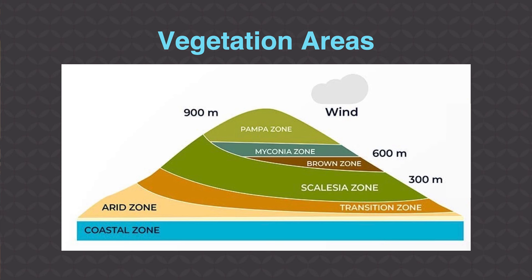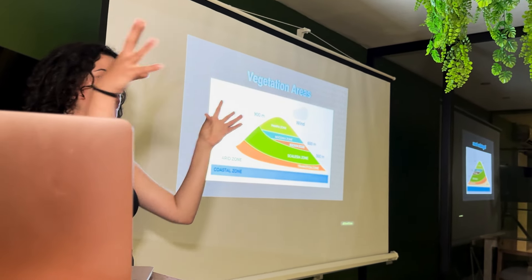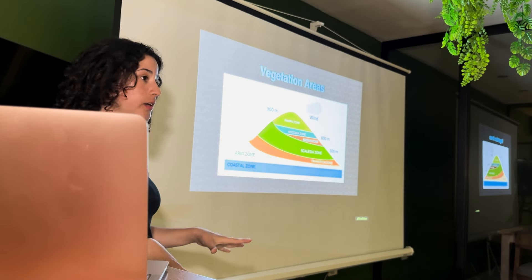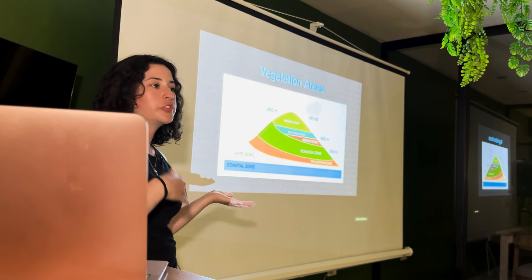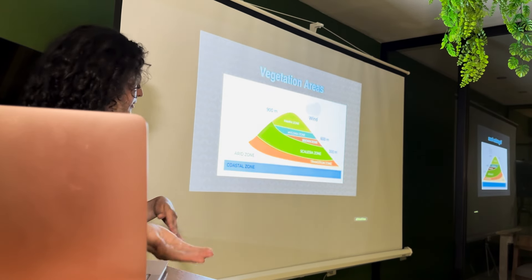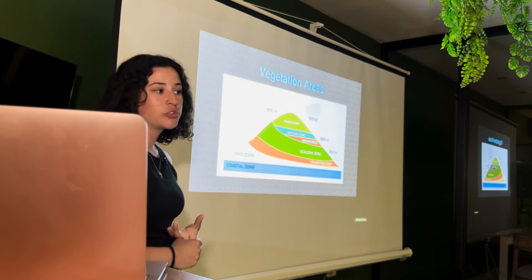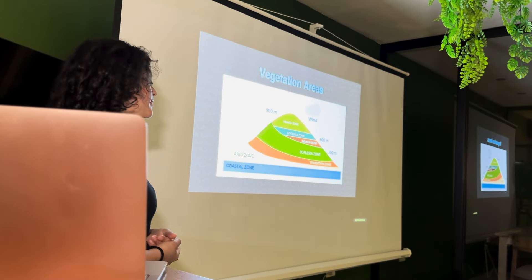The brown zone is only found in Santa Cruz. This refers to the epiphytes — like lichens and orchids that grow on tree branches rather than in the soil — turning brown in the dry season in this zone. The area of the brown zone is currently decreasing in Santa Cruz.